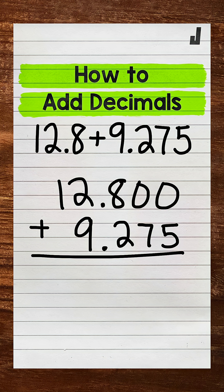Now we're set up and ready to add. We will start with the thousandths place. Zero plus five is five. Zero plus seven is seven. Eight plus two is ten.